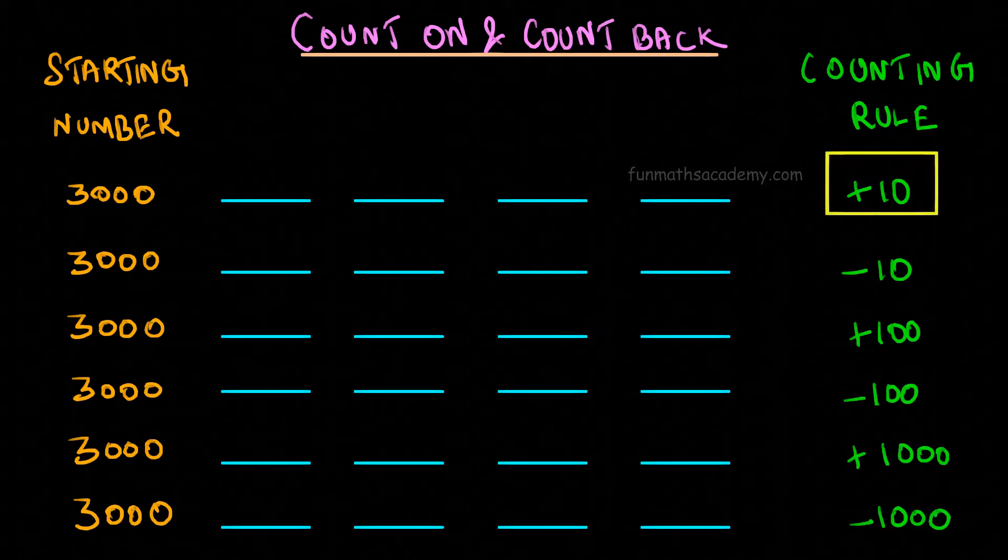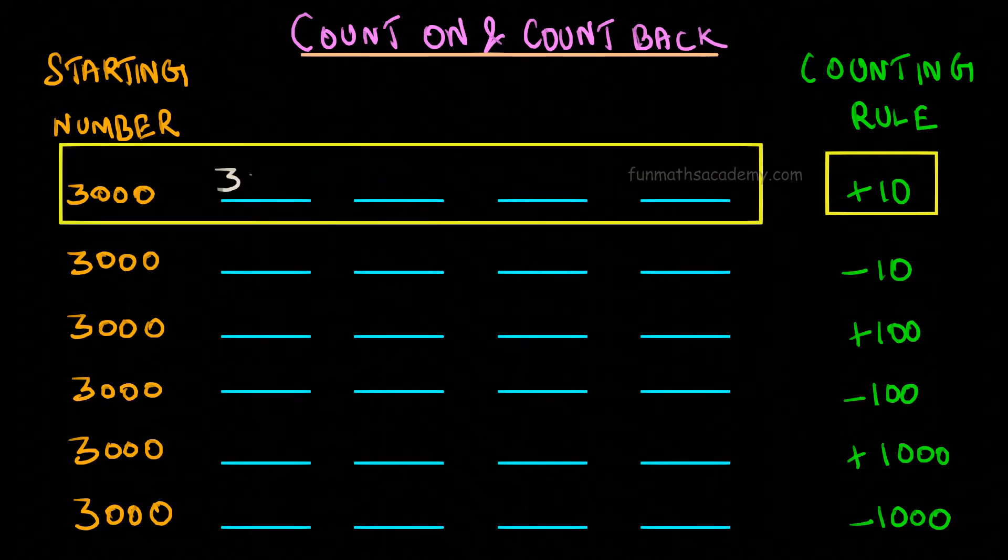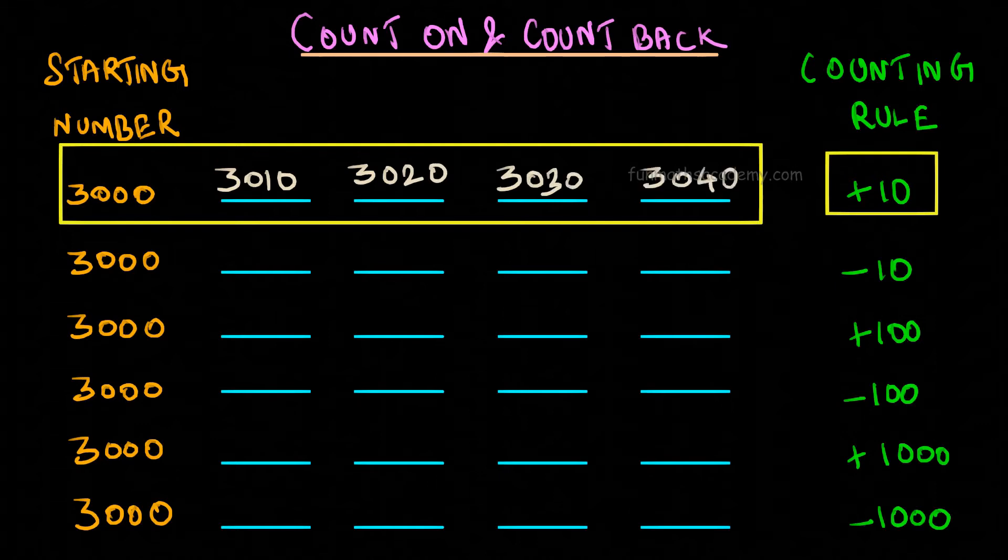When the rule is plus 10, then it will be as if we are adding 10-10 numbers. So, we get 3010, 3020, 3030, 3040.